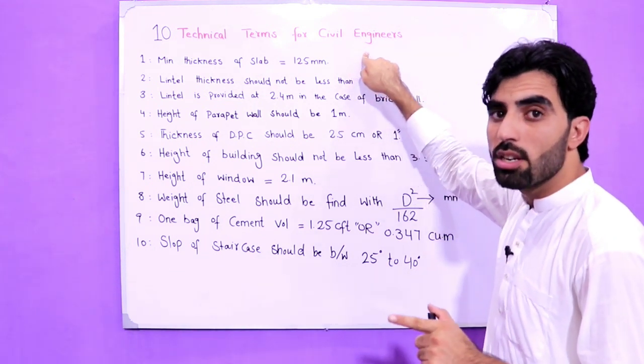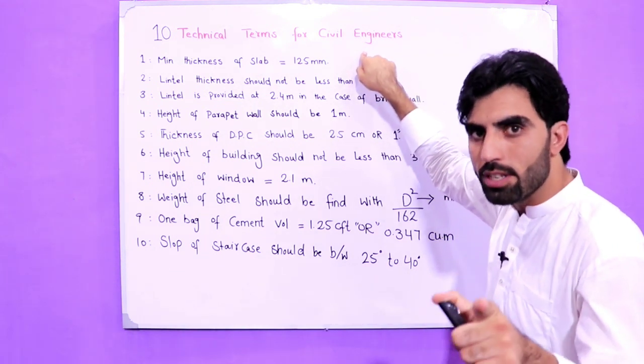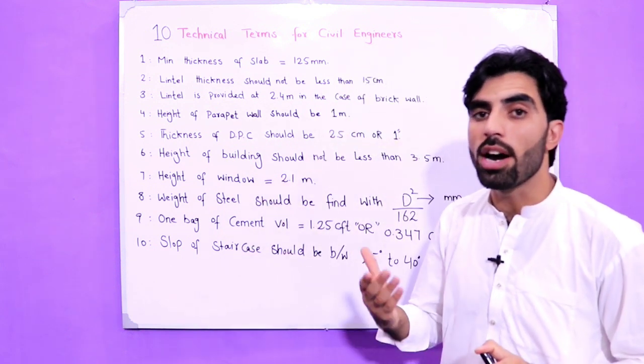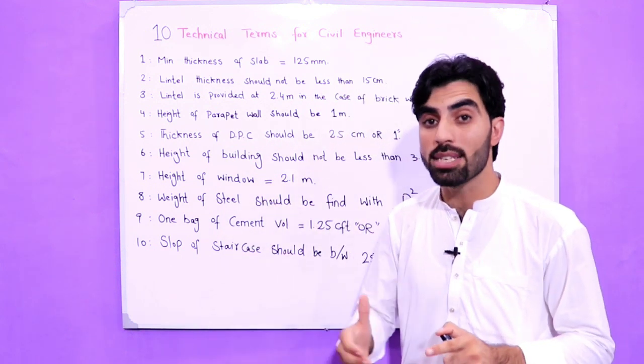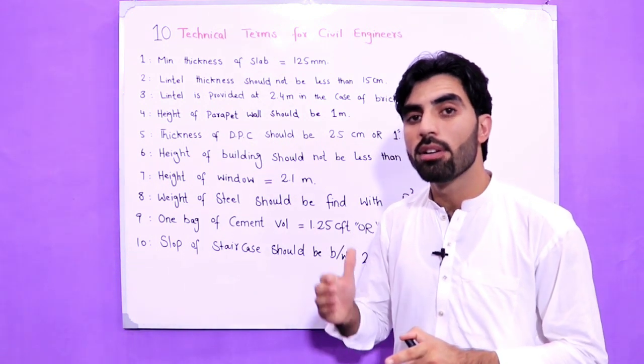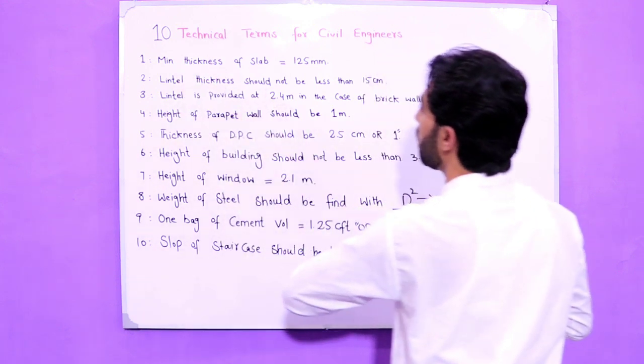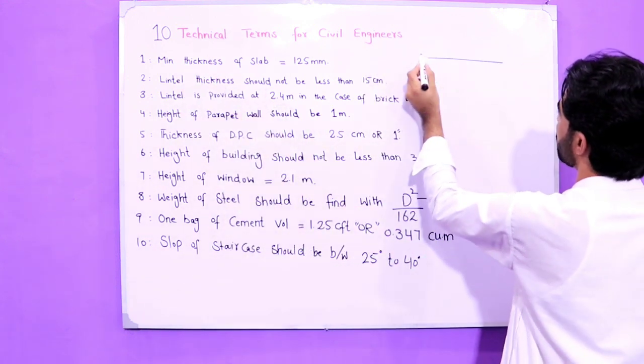10 technical terms for civil engineers, and these technical terms should be remembered by every civil engineer. The first one is minimum thickness of RCC slab should not be less than 125 millimeters. As you can see, this is the cross-section of slab, so the slab thickness should not be less than 125 millimeters.